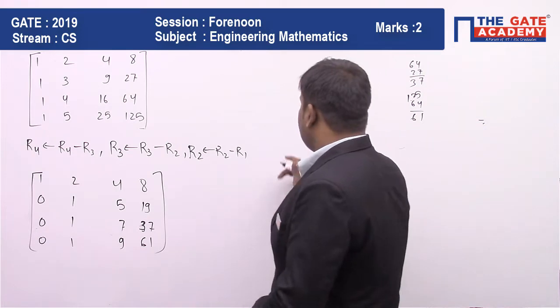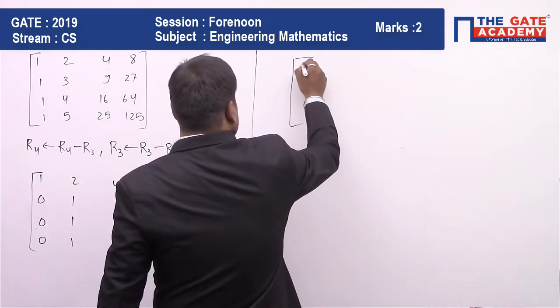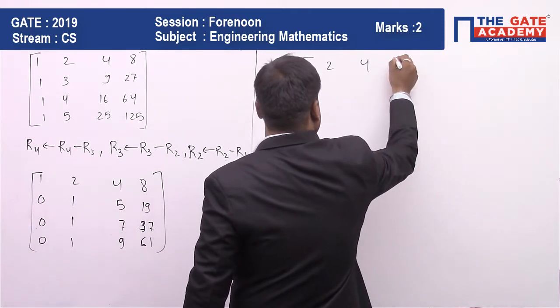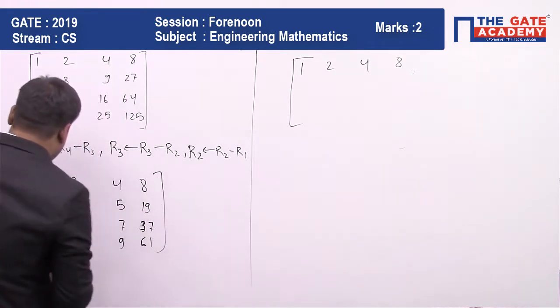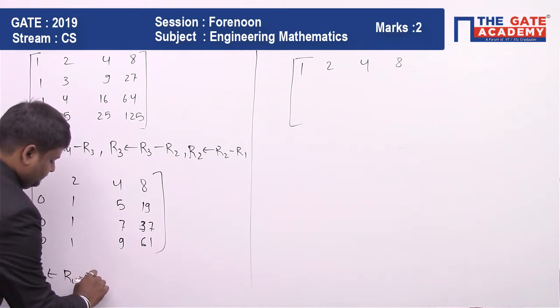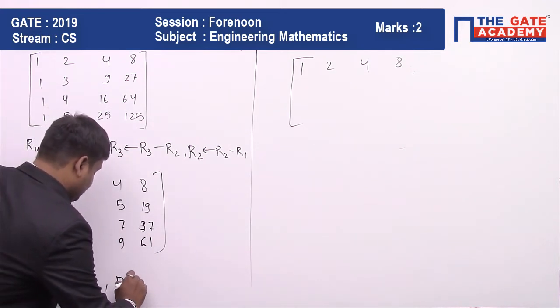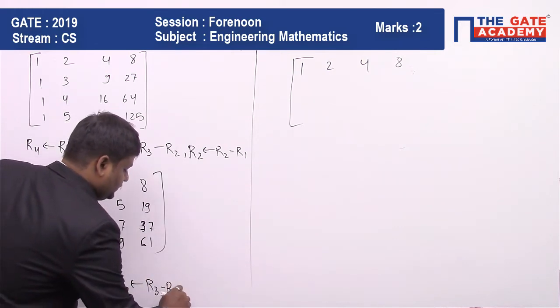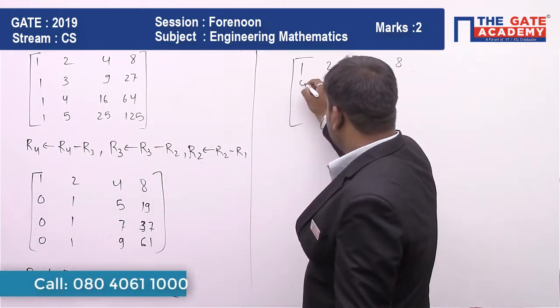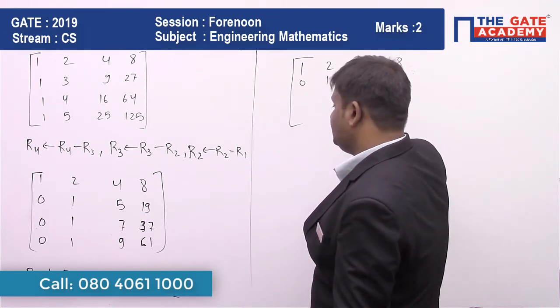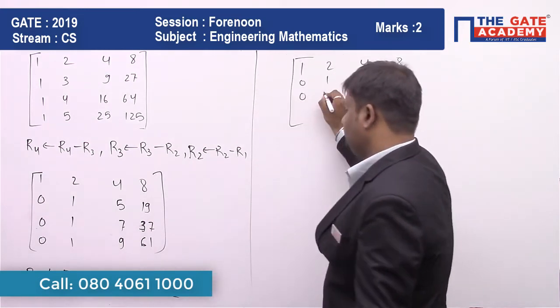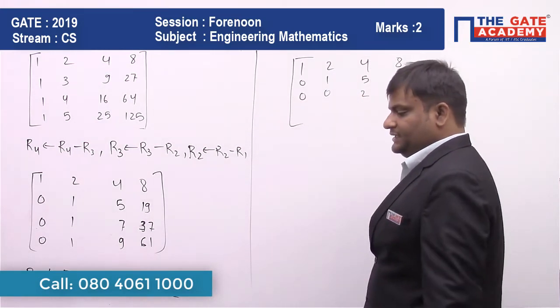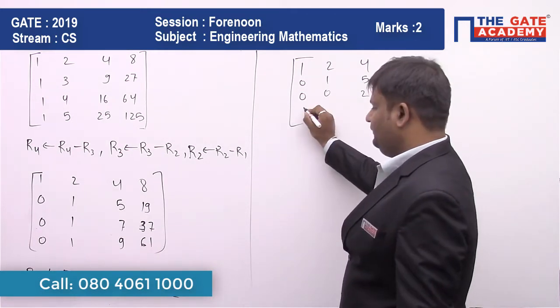Further solve it to convert into echelon form. We have 1, 2, 4, 8. We perform R4 minus R3 and R3 minus R2. The second row remains 0, 1, 5, 19. When we subtract, the third row becomes 0, 0, 2, 18.